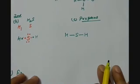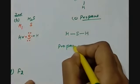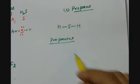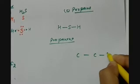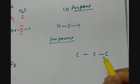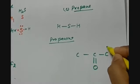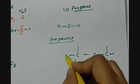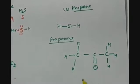For propanone: the suffix 'none' indicates a ketone group and 'prop' means 3 carbon atoms. The ketone group cannot be on the terminal carbon, so it is on the middle carbon. The rest of the valencies are fulfilled by hydrogen, giving the structure CH3COCH3.